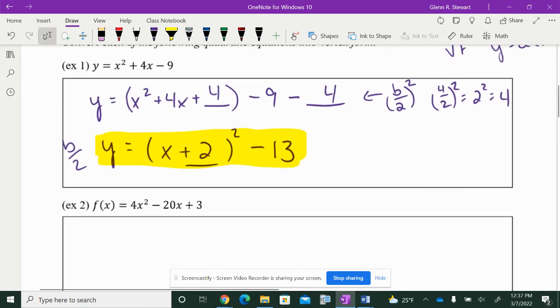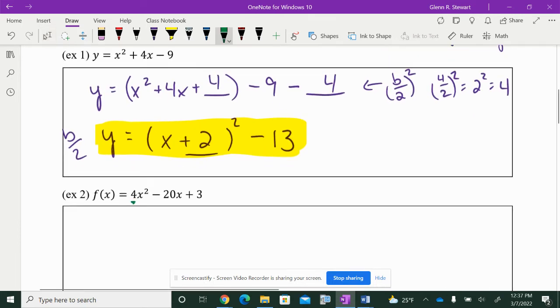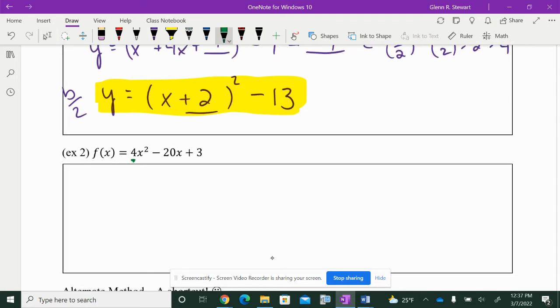Now, the difference between example 1 and example 2, notice that there's a 4 here out front. There's a number out front. We want to factor it out first. So, I'm going to factor it out of the first two terms. x squared minus, it'll be 5x, and put my blank, plus 3, minus, and in this case I'm going to put 4 times whatever number that I have.